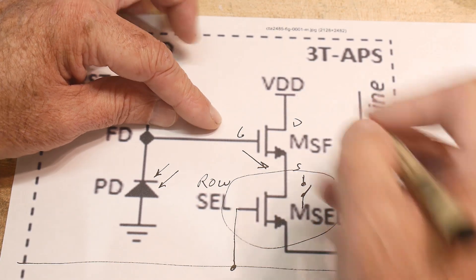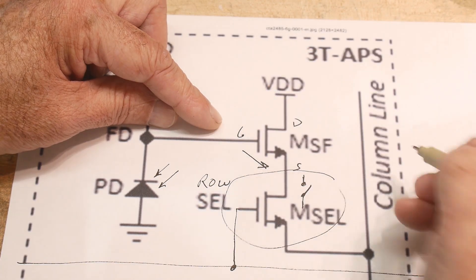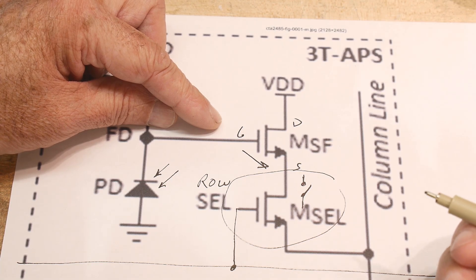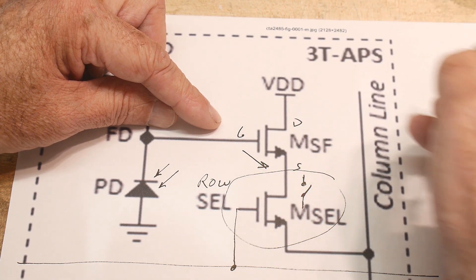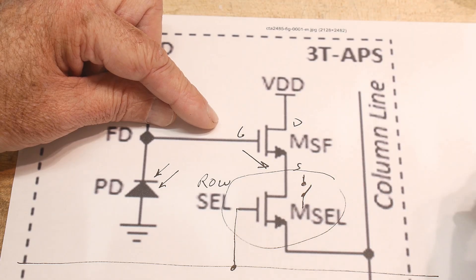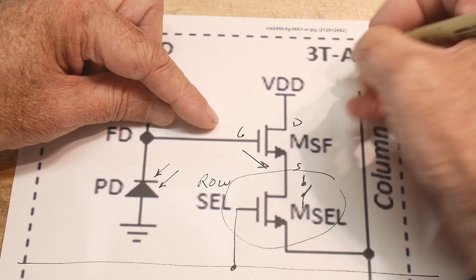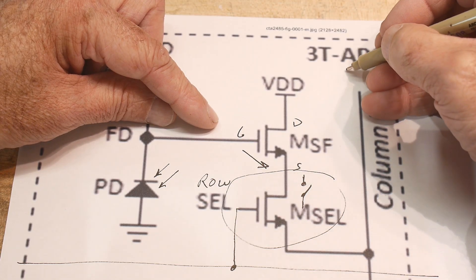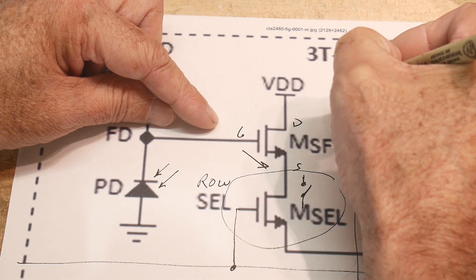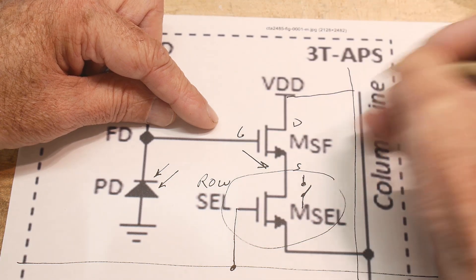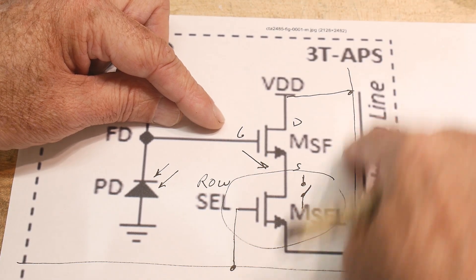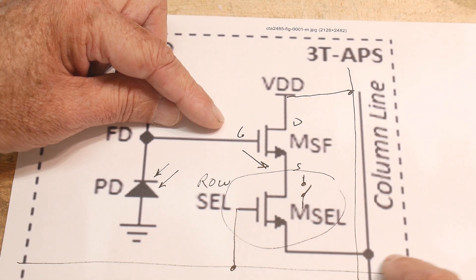We also need VDD — some supply voltage. So that's another wire. Now we have three wires: the column wire, the row select wire, and the VDD wire.